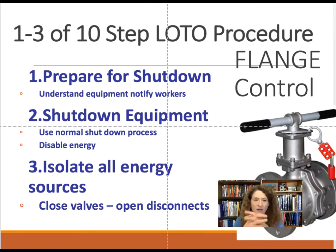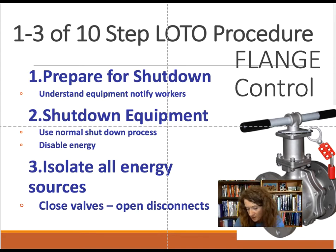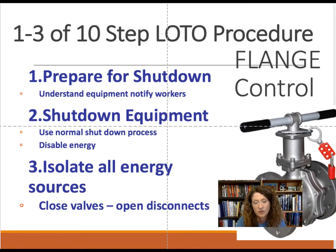There are 10 steps to the lockout-tagout procedure, and it's important they are done in the proper order. Step 1: Prepare for shutdown by understanding the equipment and notifying all people in the area, because shutting down one piece of equipment can affect other areas of a plant. Step 2: Shut down the equipment using the normal shutdown process. Step 3: Disable all energy sources — shut down the power switch, pull the plug, or close all valves and areas feeding into the equipment.